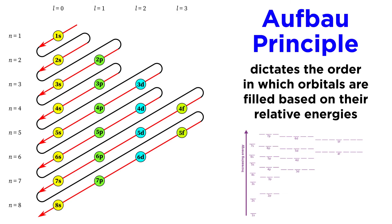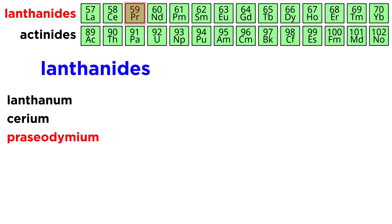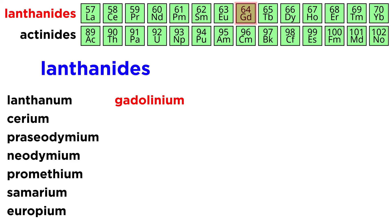This is strictly due to the Aufbau principle, which dictates the order in which orbitals will be filled. Let's quickly go through and name these elements as well. The first row in the F block is called the lanthanides. This is because the first element in this row is called lanthanum. After that we have cerium, praseodymium, neodymium, promethium, samarium, europium, gadolinium, terbium, dysprosium, holmium, erbium, thulium, and ytterbium.